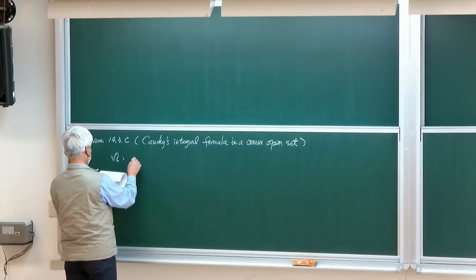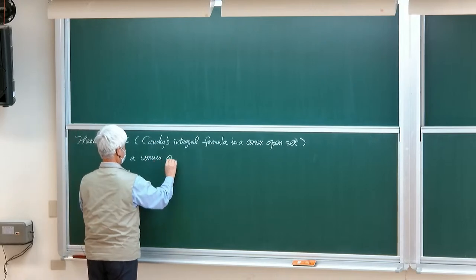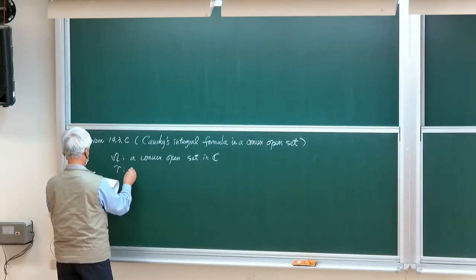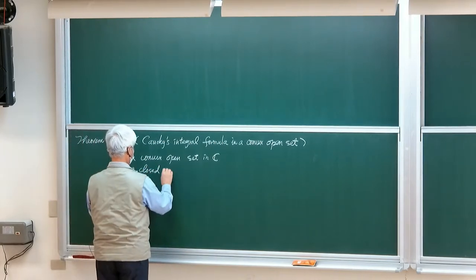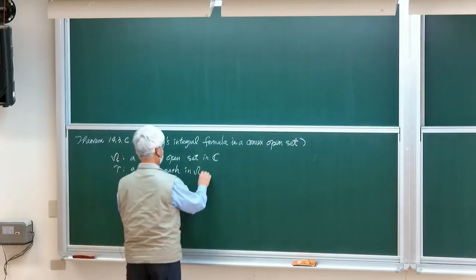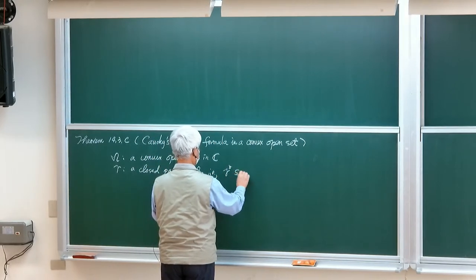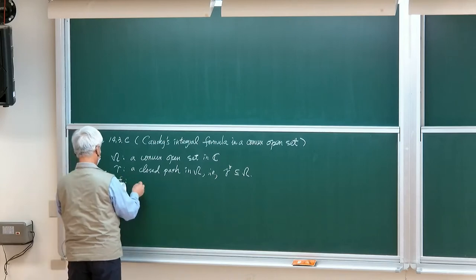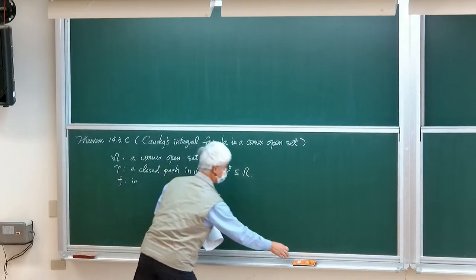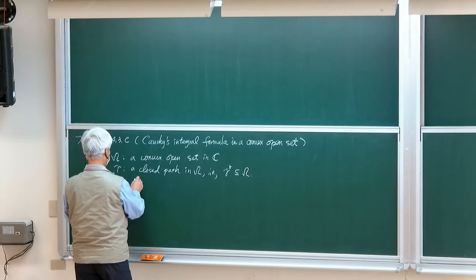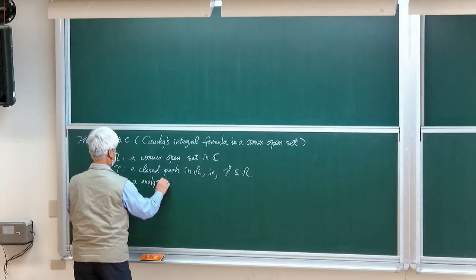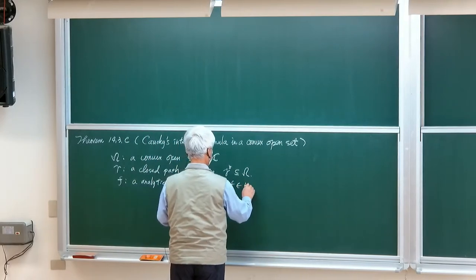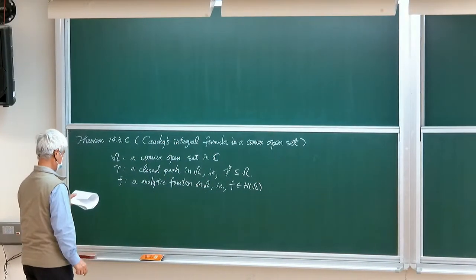Omega is a convex open set in the complex plane, and Gamma is a closed path in Omega, which means the image is contained in Omega. We let F be an analytic function defined on Omega — that is, F is in the space of all holomorphic functions defined on Omega.